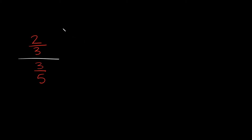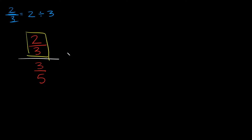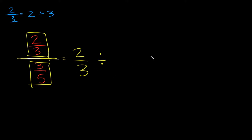So how do you divide a fraction by a fraction? First let's just look at a regular fraction really quick. If I had 2 over 3, this would be the same thing as the numerator 2 divided by the denominator 3. We can apply that same logic to our problem: the numerator 2 over 3 divided by the denominator 3 over 5.